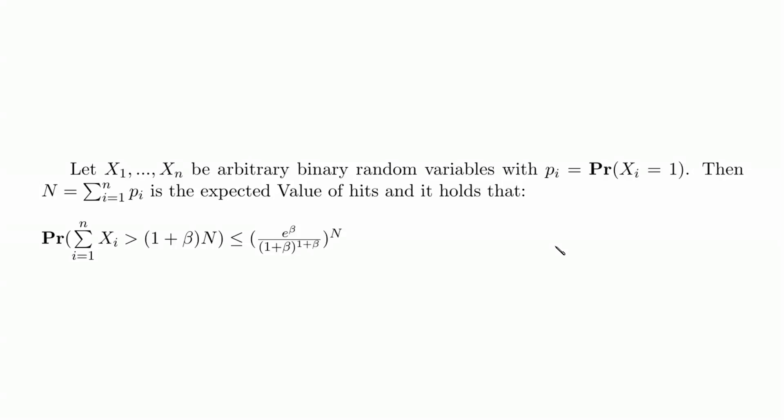Hello and welcome. Today we shall prove the Chernoff inequality, also known as the Chernoff bound, in its multiplicative form, meaning that on the right side of this term we have 1 plus beta times the expected value.